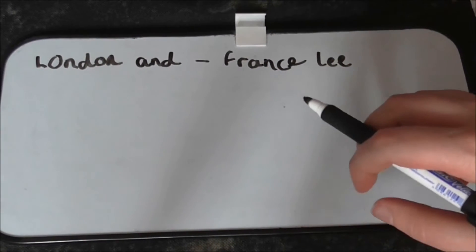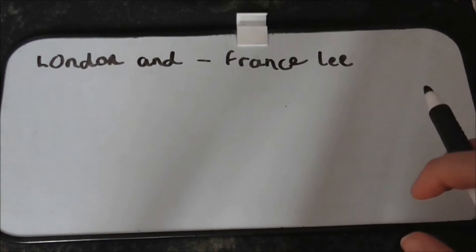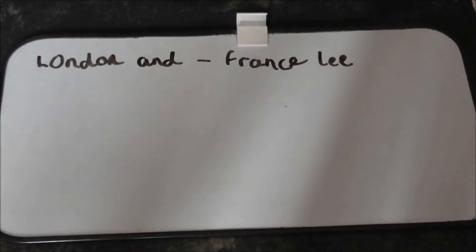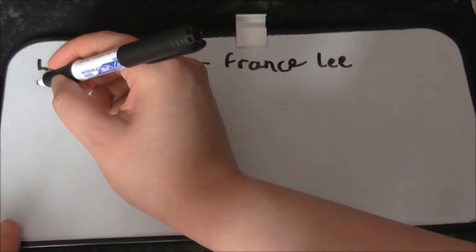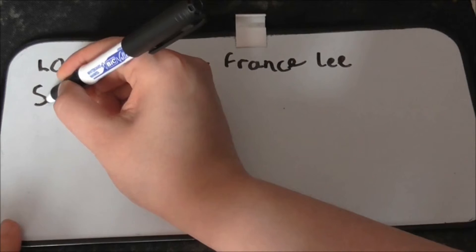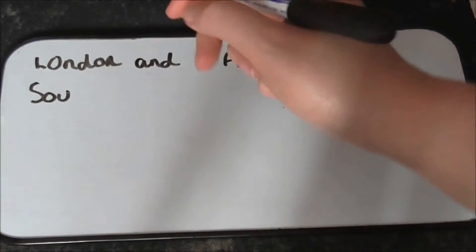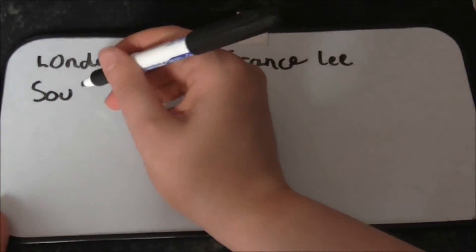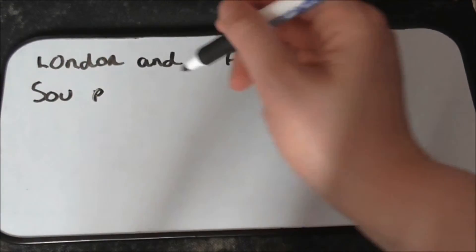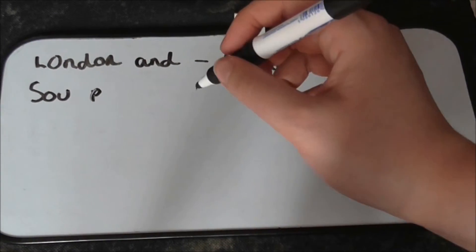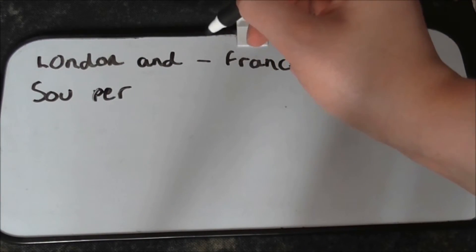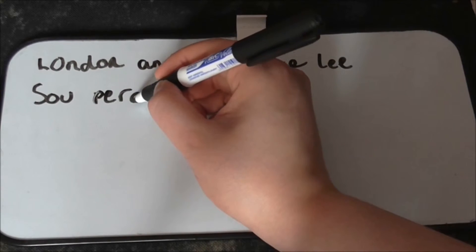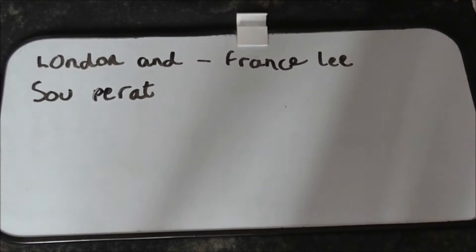And then below that is a new mysterious word that I'm not 100% familiar with. It spells like S, O, U, P, E, R, A, T. So what we have here is London and Francely, and then S-O-U-P-E-R-A-T.